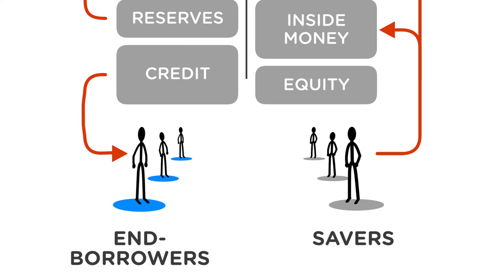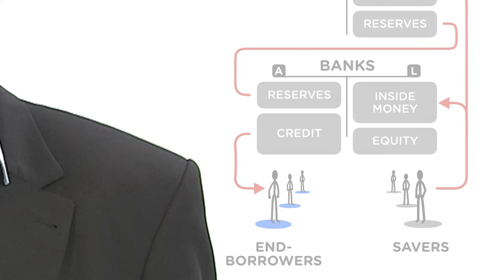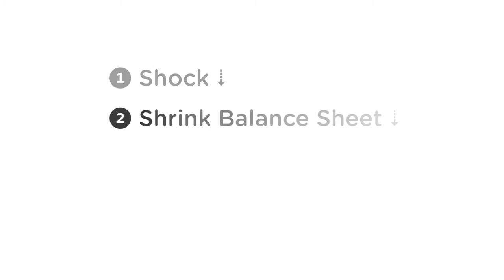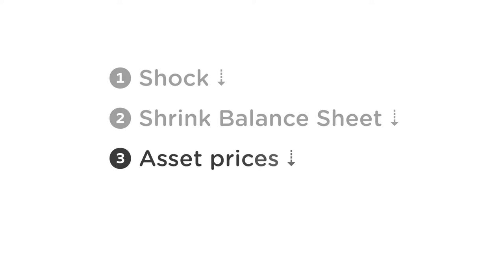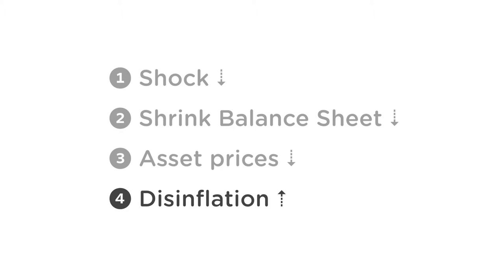Suppose some of the end borrowers suffer an adverse shock and, as a consequence, they are less likely to pay back their debt. To see how the shock is amplified into a large financial crisis, it is useful to split up the impact of this adverse shock into four steps: first, the direct impact of the shock on the assets of the banks; second, the response of the banks shrinking the balance sheet; third, the impact on asset prices; fourth, the impact on the real value of inside money.